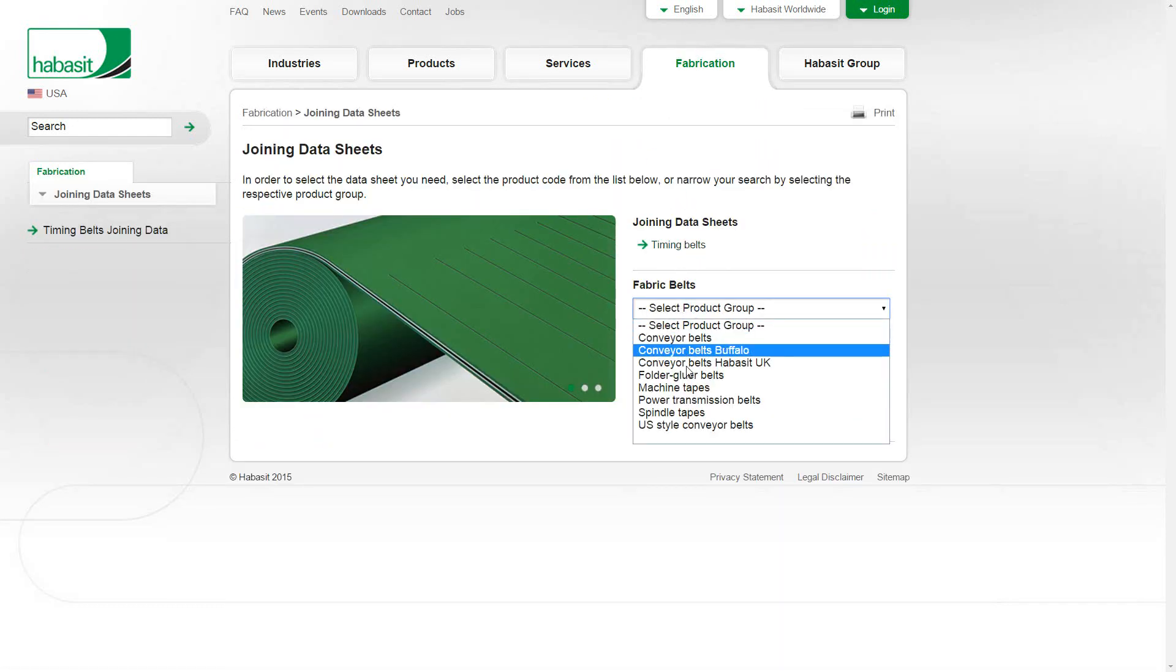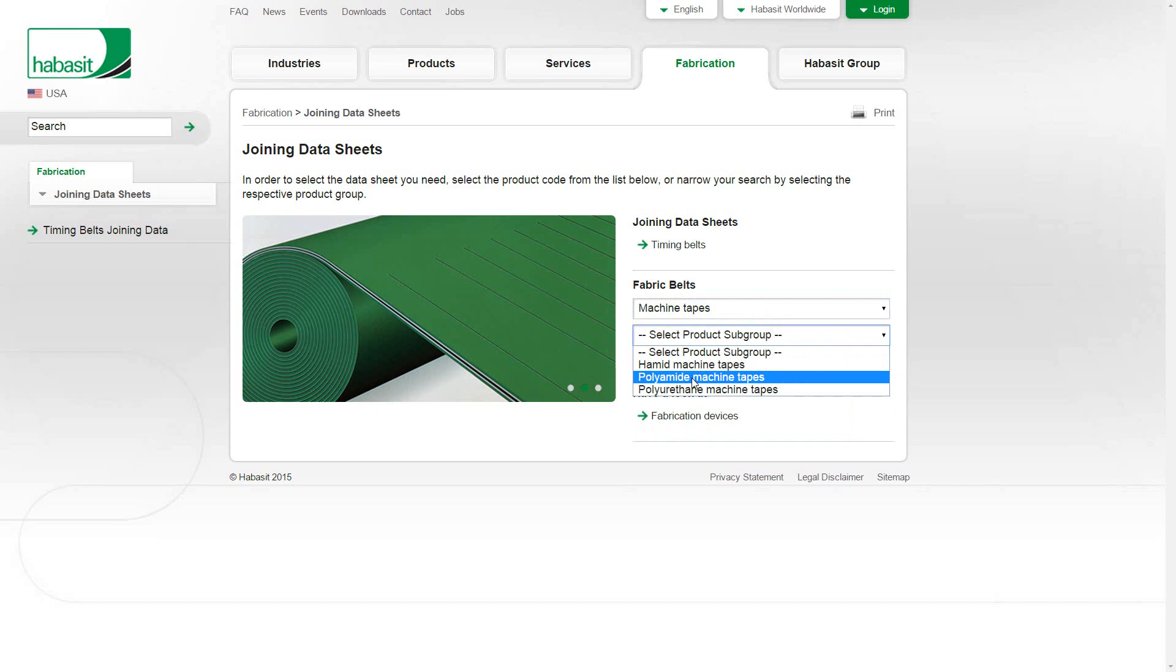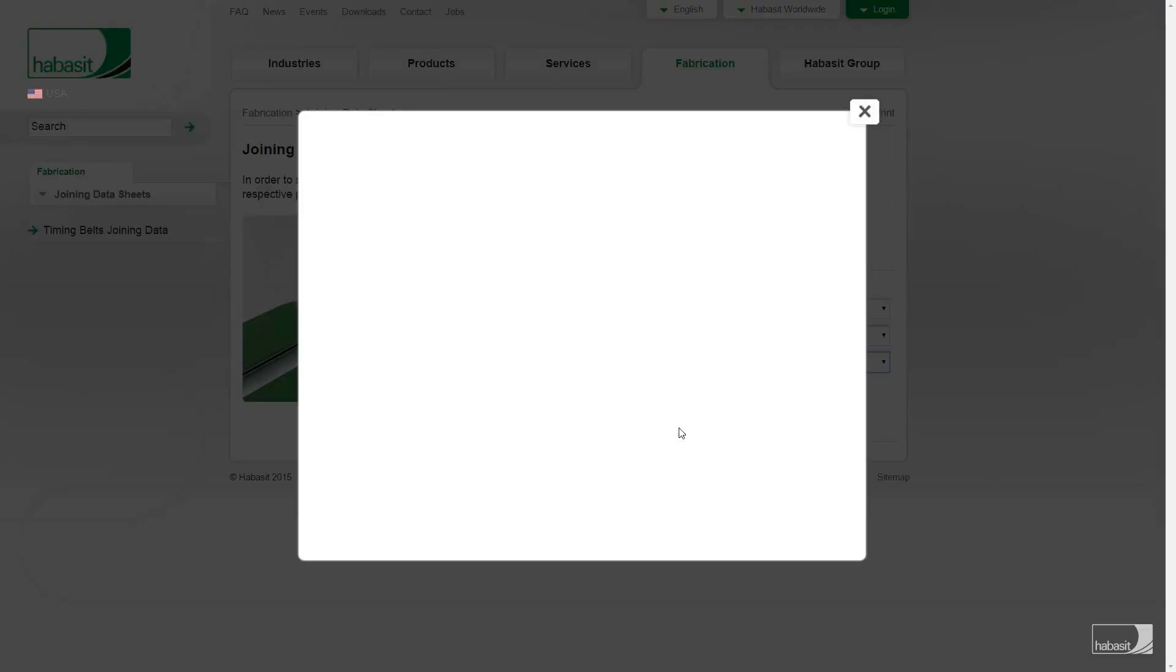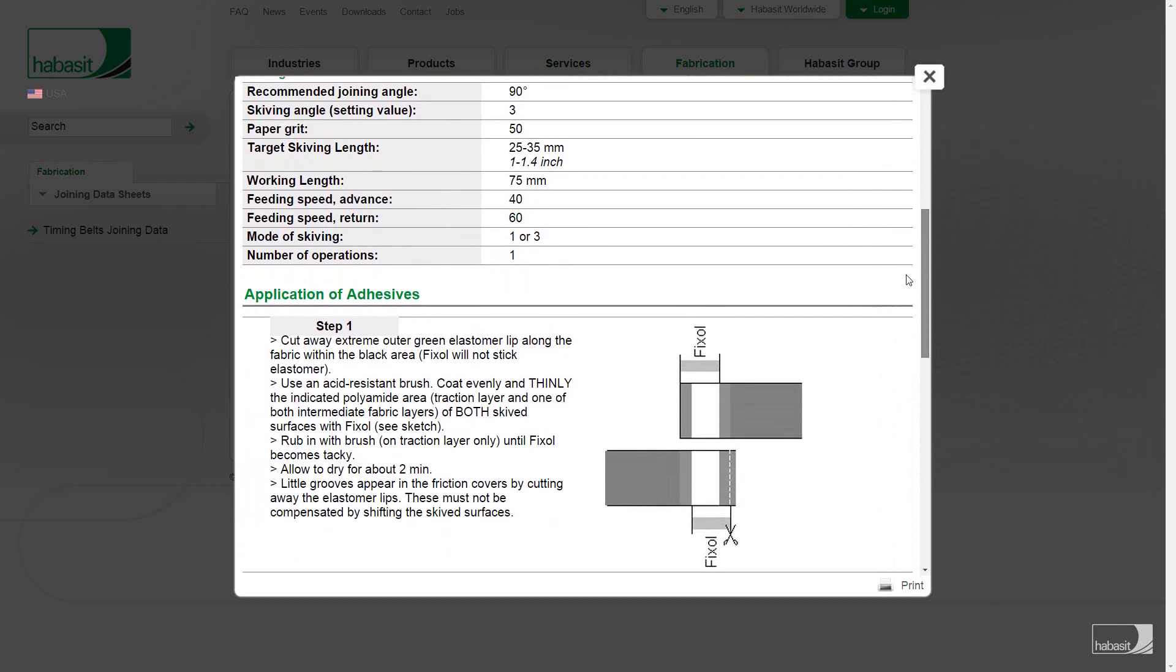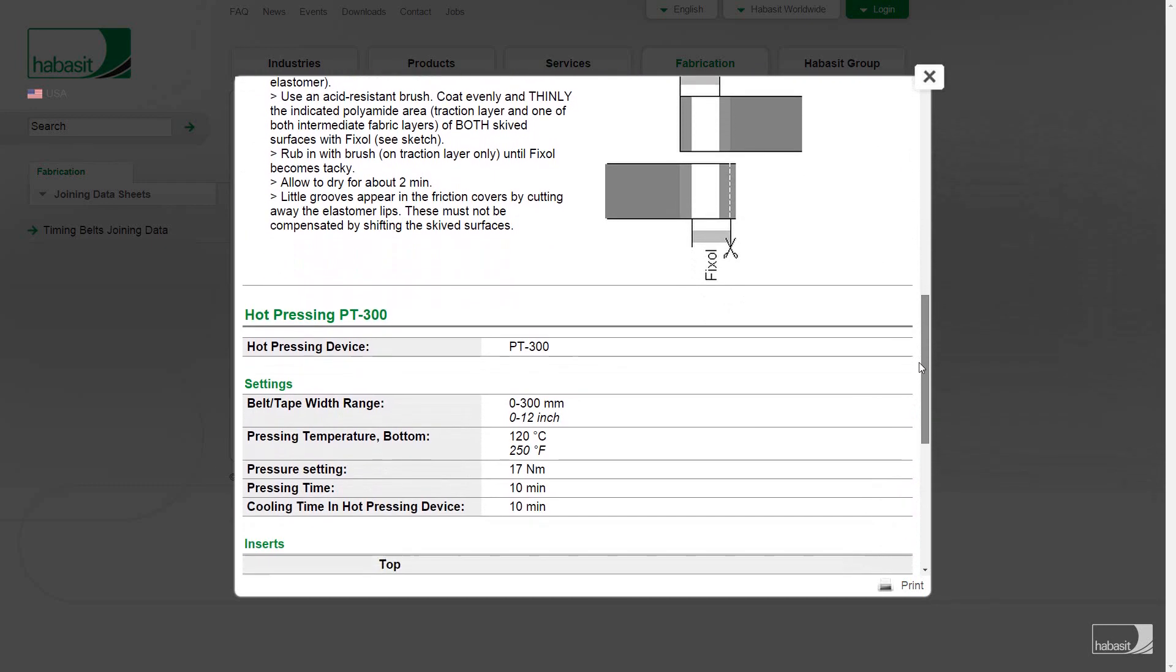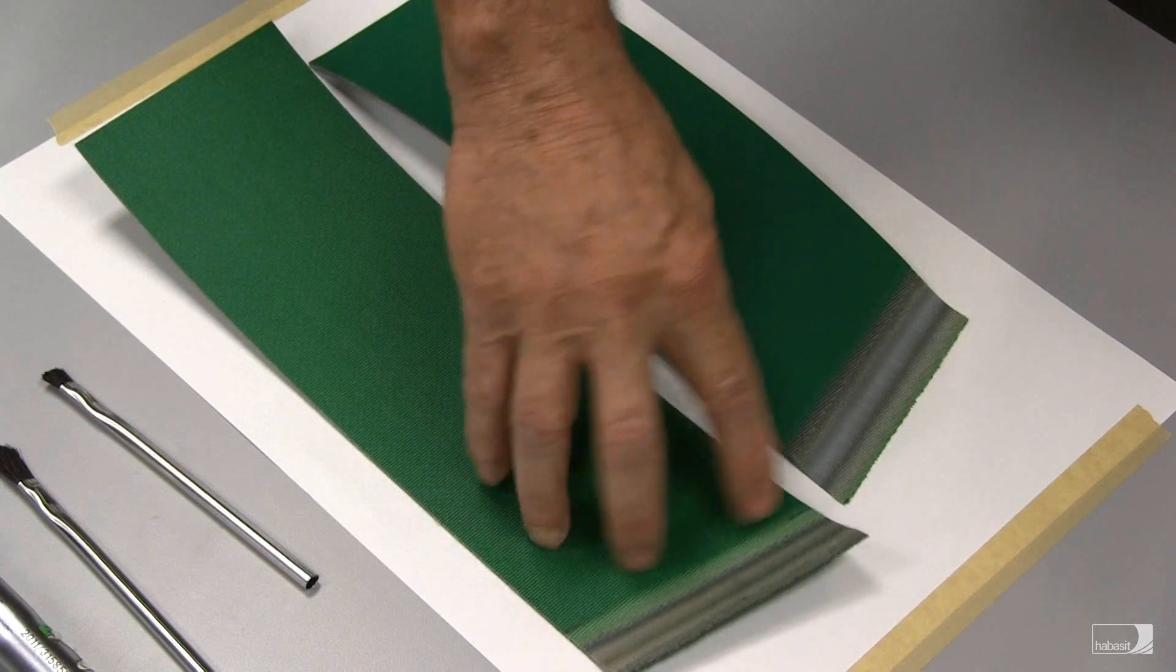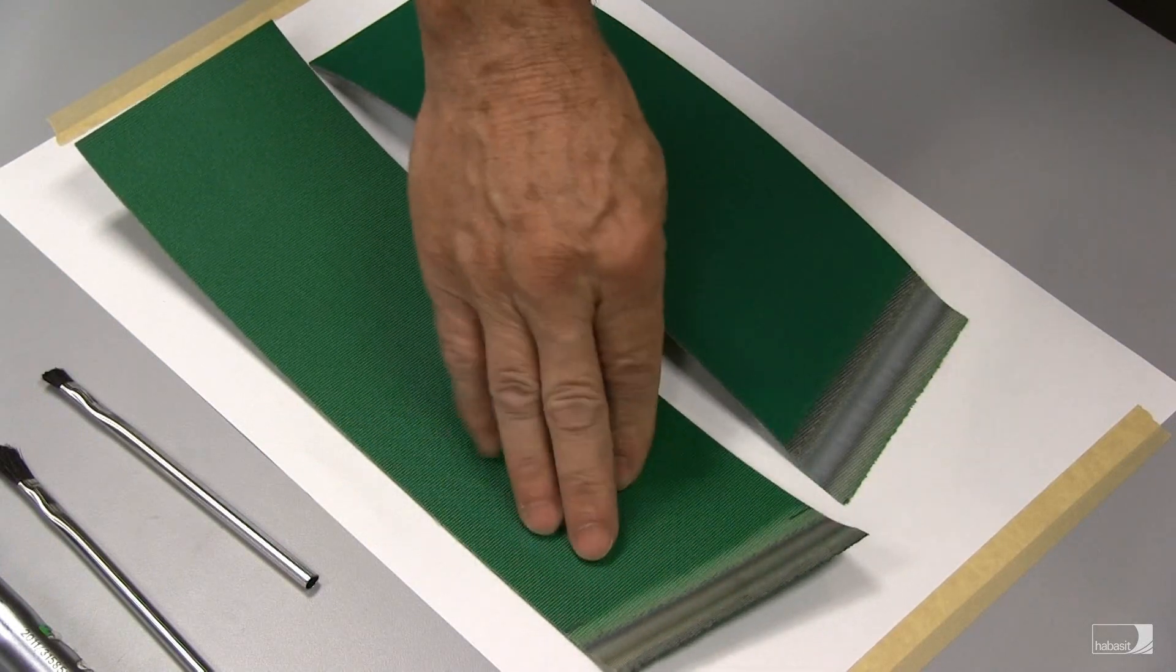The first page of the joining data sheet shows the information about the skive on the belt. The skive should be between 25 and 35 millimeters long, feathered down to the edges, and all of the layers of the belt should show up parallel to the cutting edge.